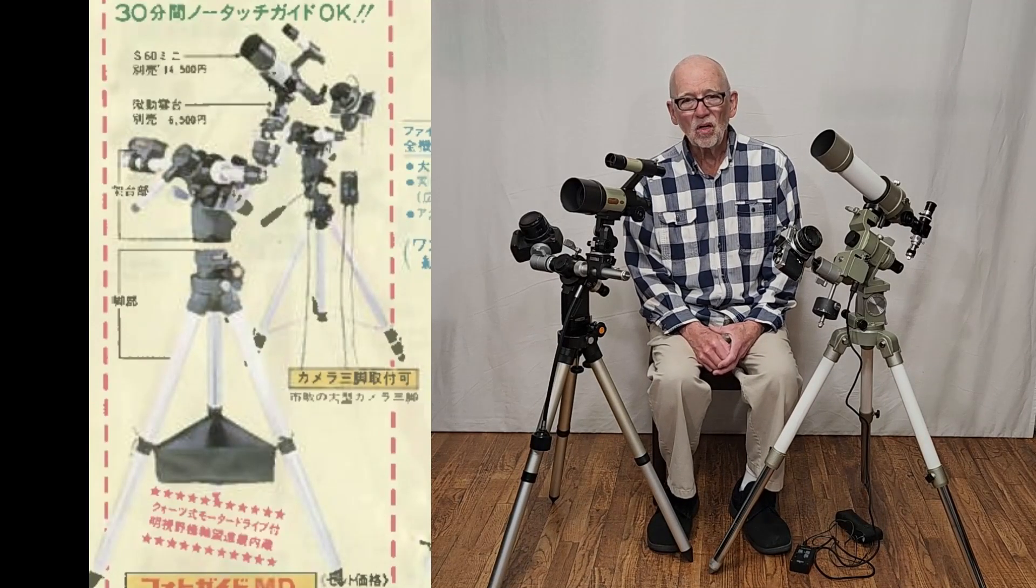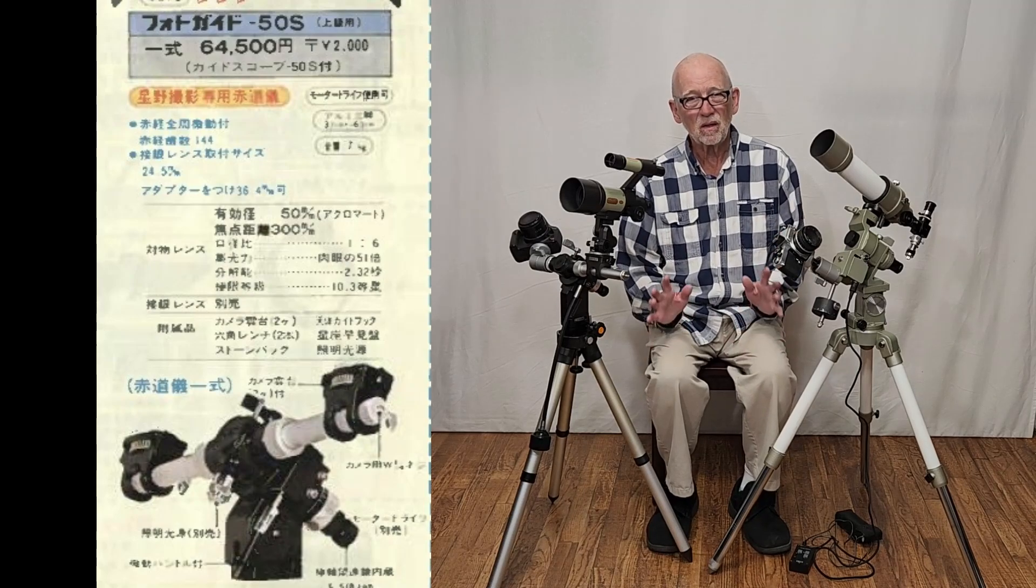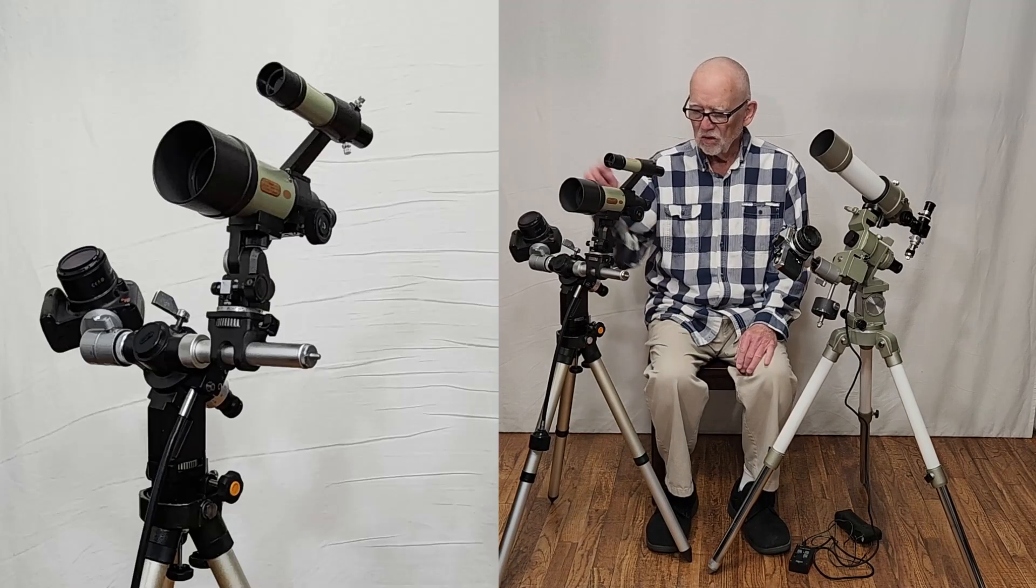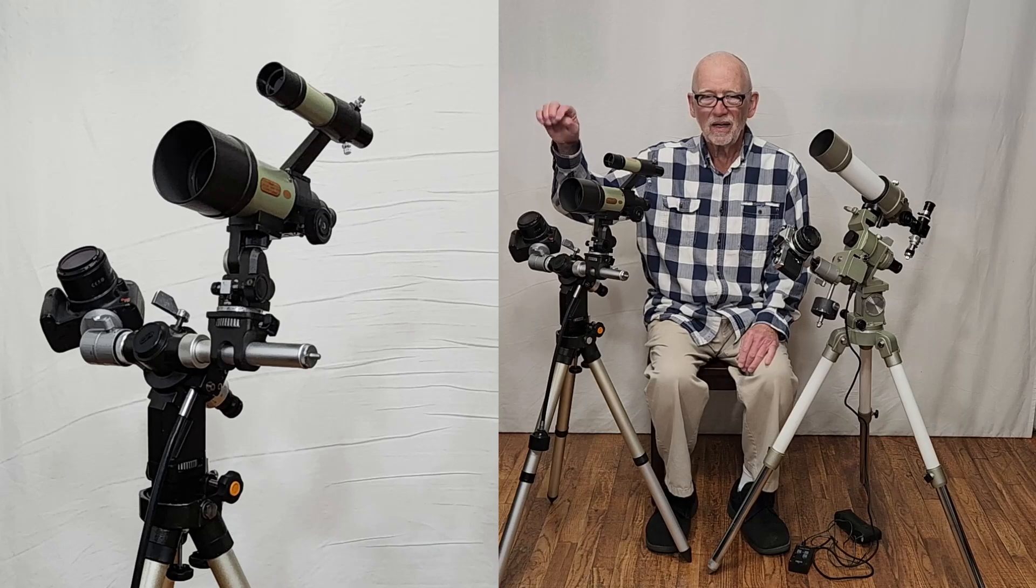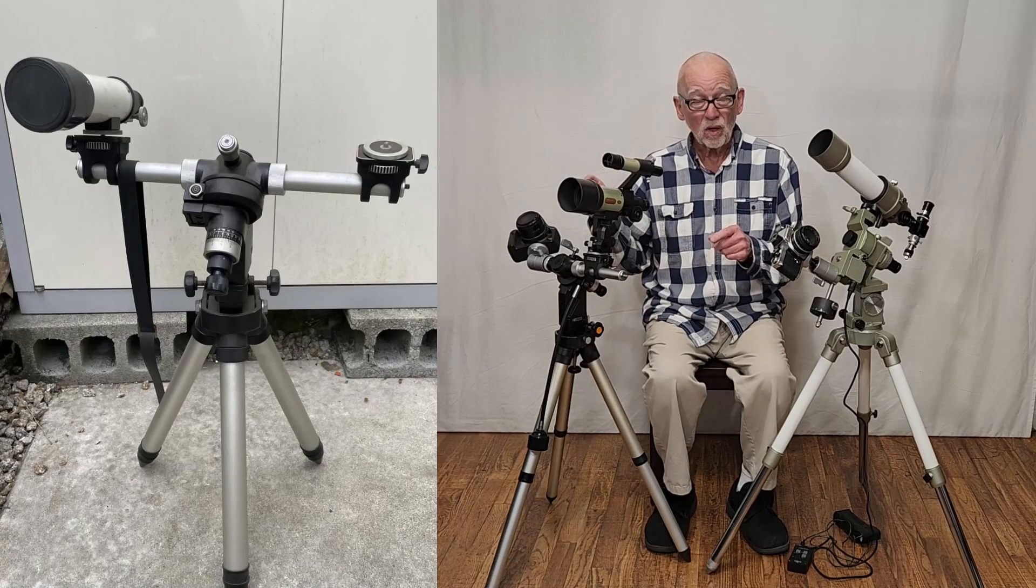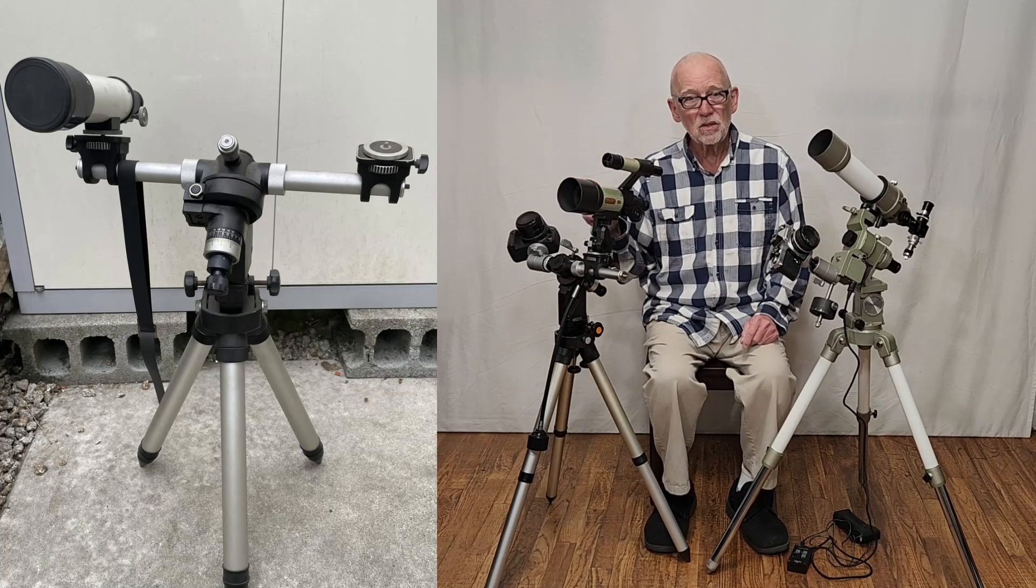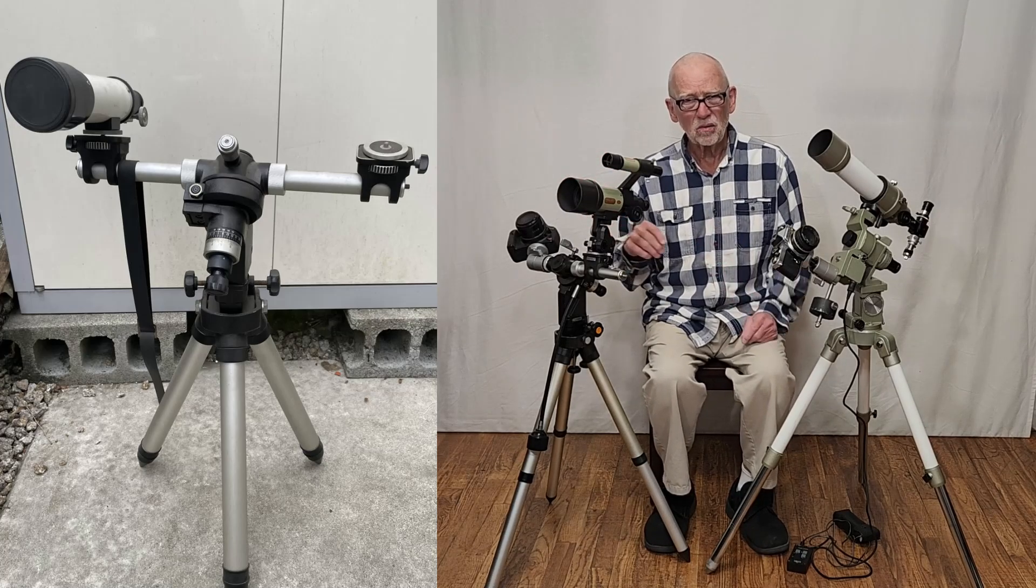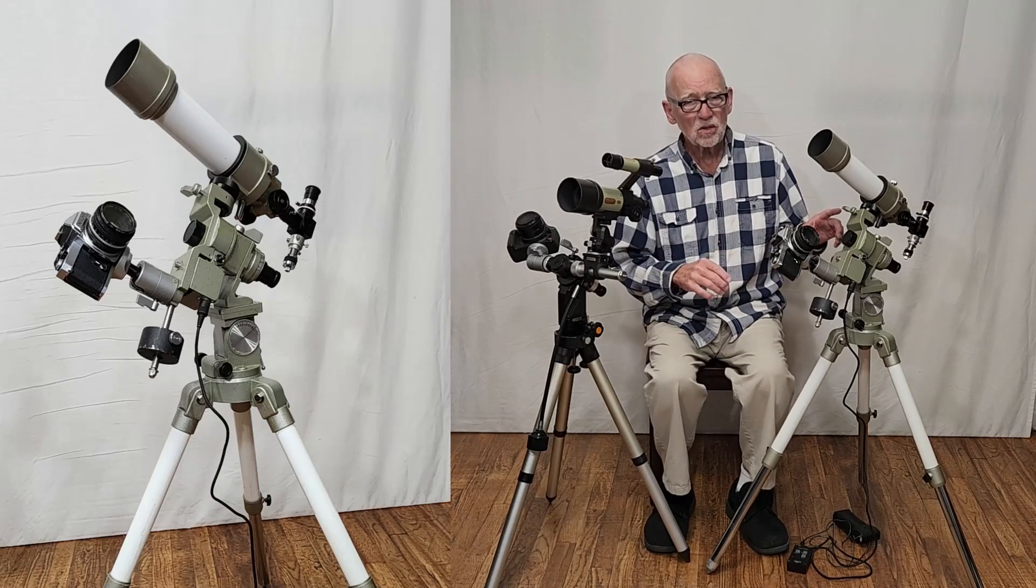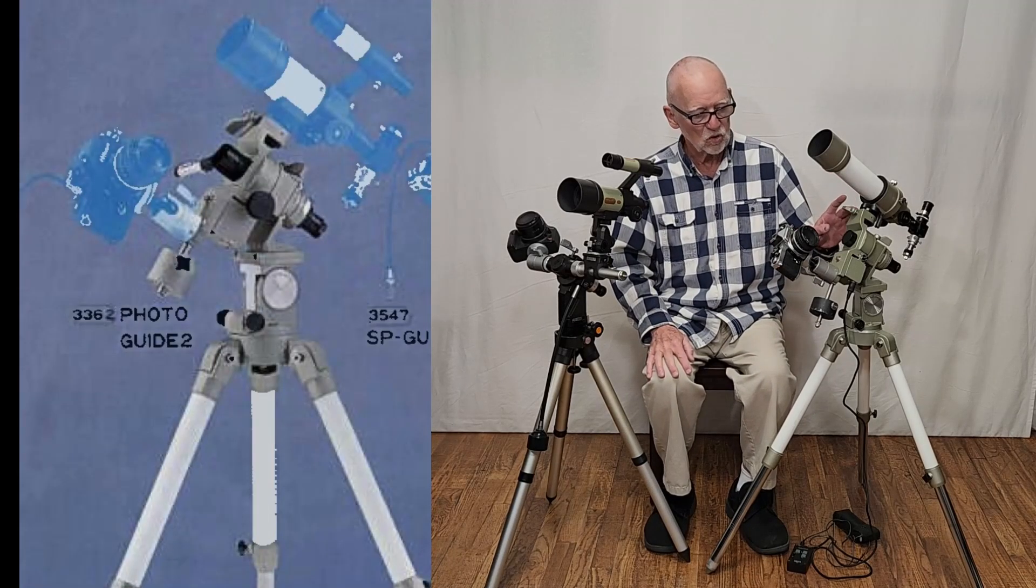My name is Dave. Today we're going to have a look at the Vixen Photoguide series of little tracking mounts. This one is called the Photoguide MD, but it's very similar to the Photoguide 50S with a 50mm guide scope on it and several other different varieties. This one is called the Photoguide 2 and I don't believe there are too many different varieties of this one.